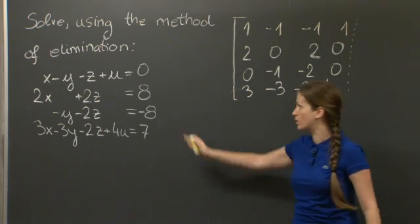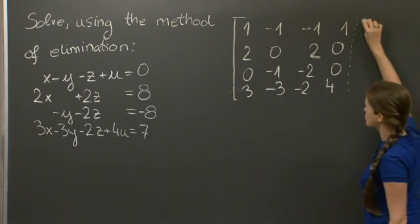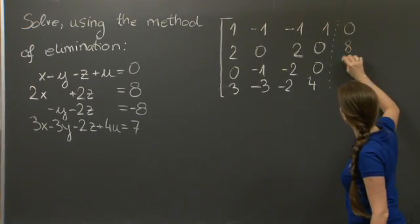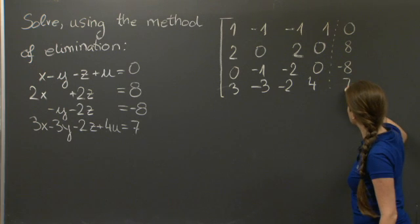And as we care about the right-hand side as well, we're going to copy this information and get the augmented matrix of the system: 0, 8, -8, 7.